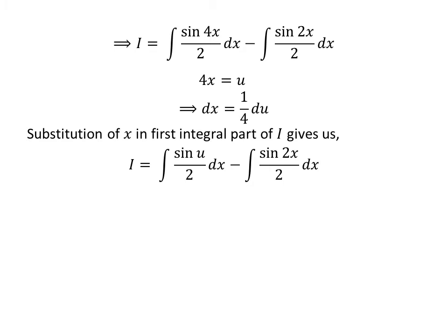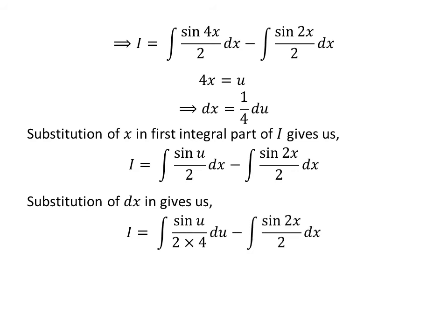Taking 4 to the right-hand side gives us dx is equal to 1 upon 4 times du. Substituting 4 times x by u, and replacing dx by 1 upon 4 times du, i becomes the integral of sine of u upon 2 times 4 with respect to u, minus the integral of sine of 2 times x upon 2 with respect to x. As 2 times 4 is 8, and the integral of sine of u is minus cosine of u, so i is equal to minus cosine of u upon 8, minus the integral of sine of 2 times x upon 2 with respect to x.